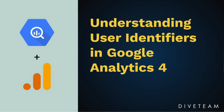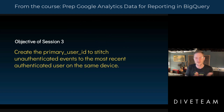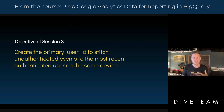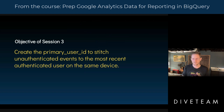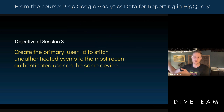What we want to do today is focus on how to create what, in Google Analytics, the User Explorer report now calls an effective user ID. It's the user identifier that stitches together unauthenticated events to the most recent authenticated user on the same device. And once you've created your stitched identifier, you can start creating new fields because you can aggregate against that identifier.